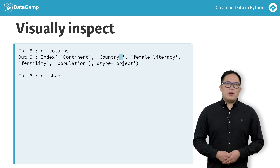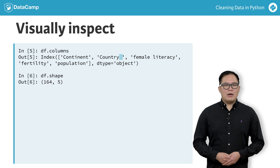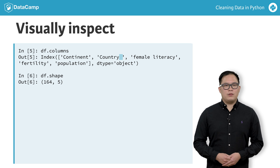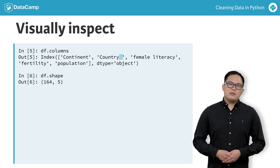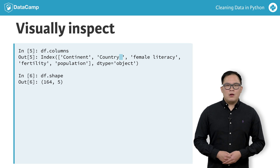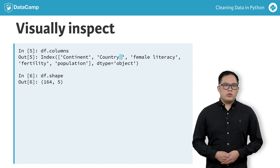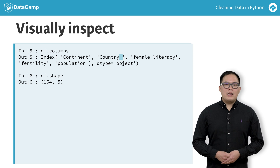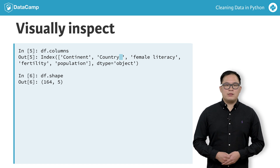We can call the shape attribute to look at the number of rows and columns of our data. This is useful if you cannot visually see all your data with head and tail. Our data has 164 rows. A quick Google search shows that there are 196 countries in the world, so not every country is listed in this data set.